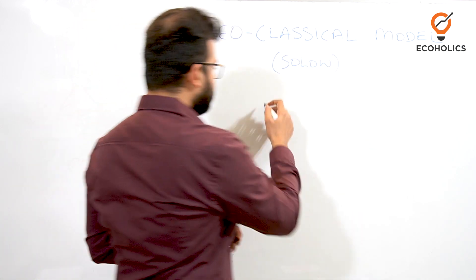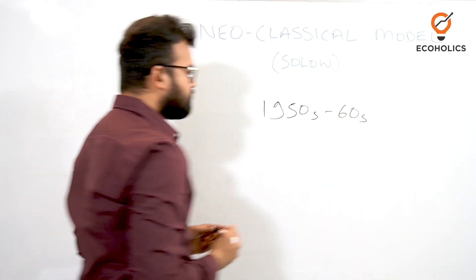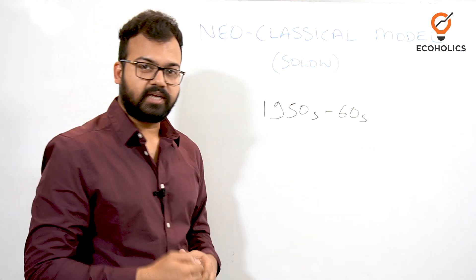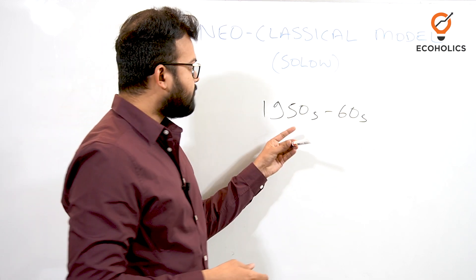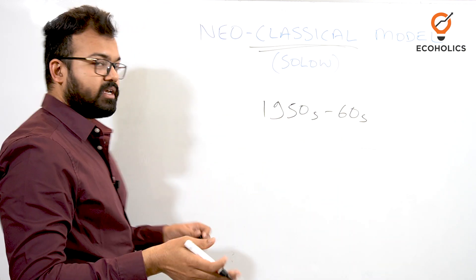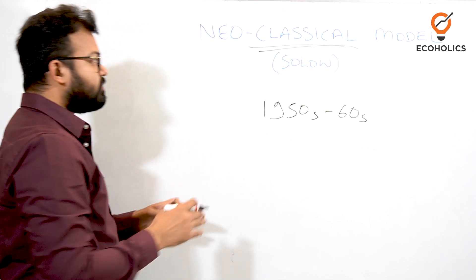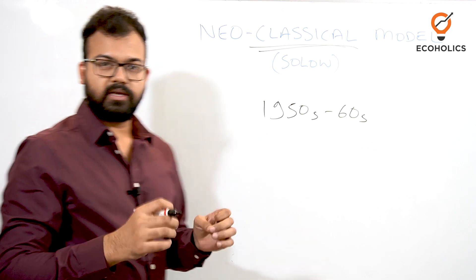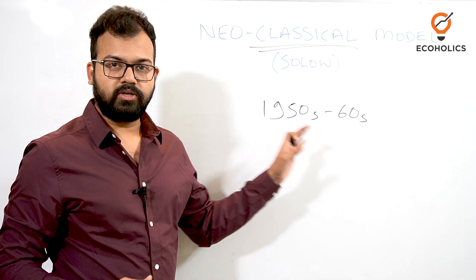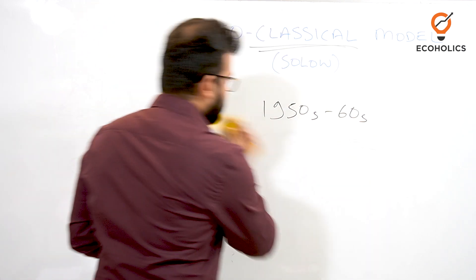Here we'll focus on the Solow model, which was built around the 1950s and 60s — that is the timeline when the neoclassical model started coming into the picture. The word 'classical' signals that this model is in contrast to the Harrod-Domar model studied in previous videos. The Harrod-Domar model places main importance on capital accumulation.